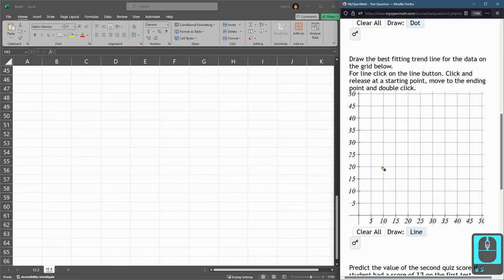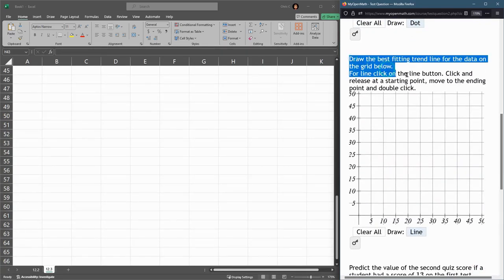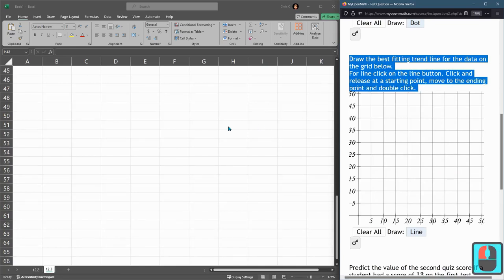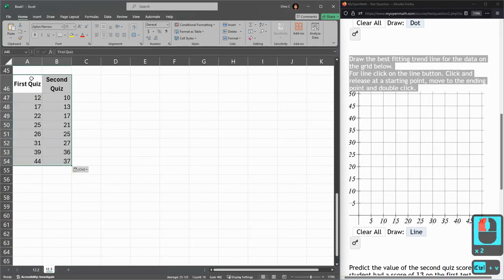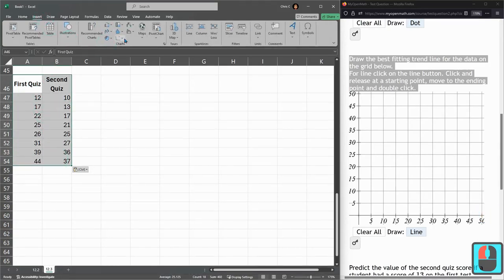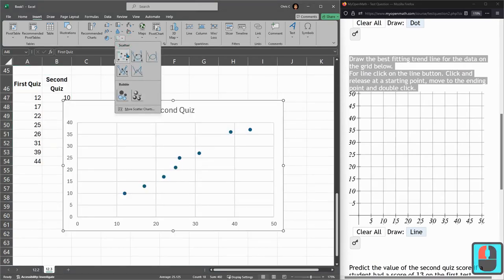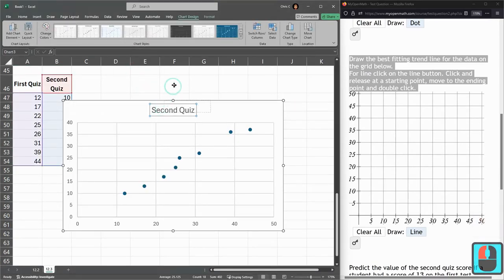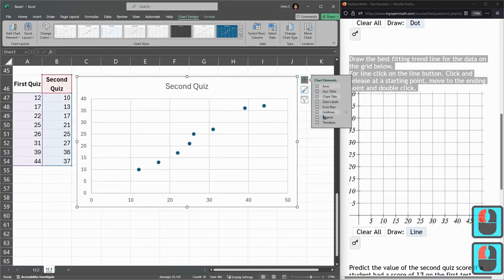I'm going to go down here to draw the best fit trend line on the grid below. We have to get that line so I'm putting in all the values here like we've done. You're making an insert chart scatter and then, oops didn't want to do that, just want to move it over.